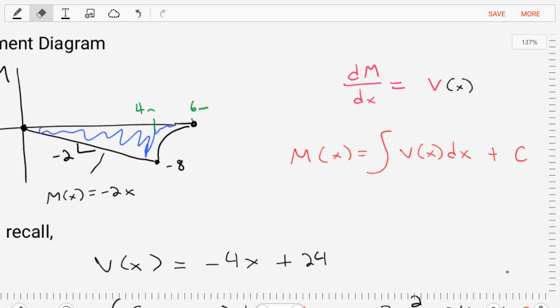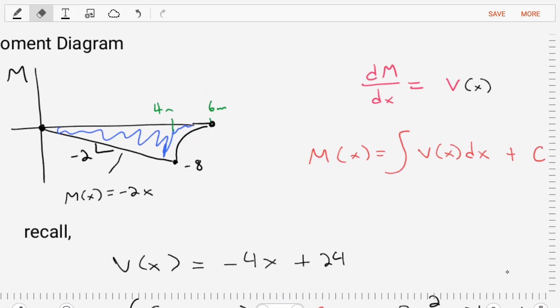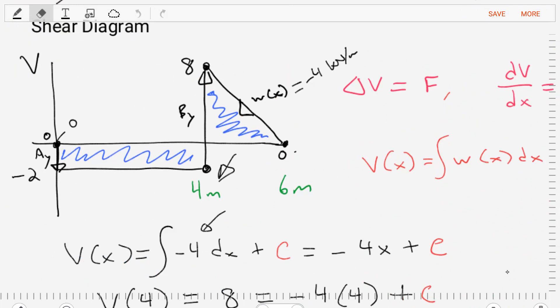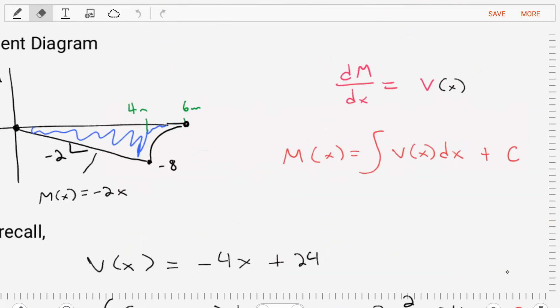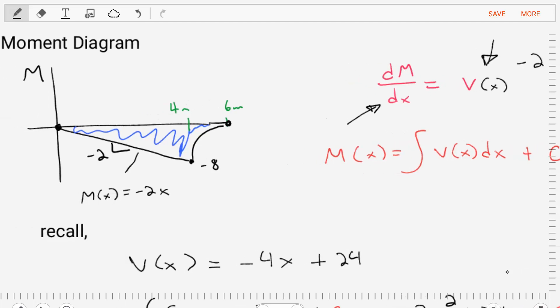The first thing we want to do is go back and look at our shear force diagram. In our shear force diagram, we started at zero and then we instantly jumped to negative two and we were at a constant negative two kilonewtons from zero to four meters. Well, if we take that into consideration, if the shear force is a constant of negative two, then that means the slope in our moment diagram is negative two.